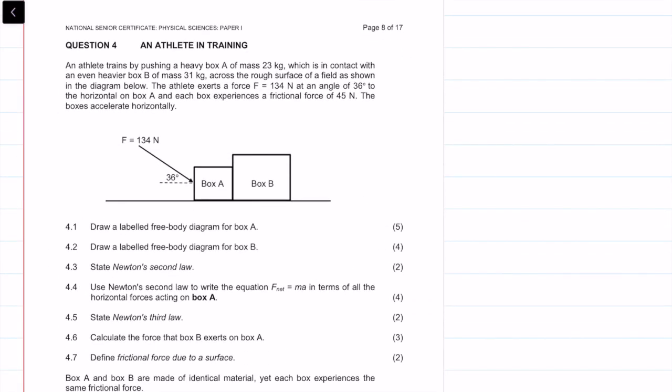An athlete trains by pushing a heavy box A with a mass of 23 kilograms, which is in contact with an even heavier box B with a mass of 31 kilograms across a rough surface. As shown in the diagram, the force is 134 newtons at an angle of theta to the horizontal. Each box experiences a frictional force of 45 newtons for both boxes. The boxes accelerate horizontally. Let's get into it.